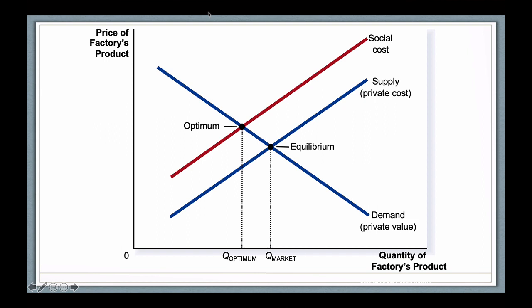Now, I haven't drawn this, but of course, Q optimum will also involve a higher price being paid for the good. But the total benefit for society as a whole will be higher at this higher price because now the social cost that is caused by pollution is being taken into account.